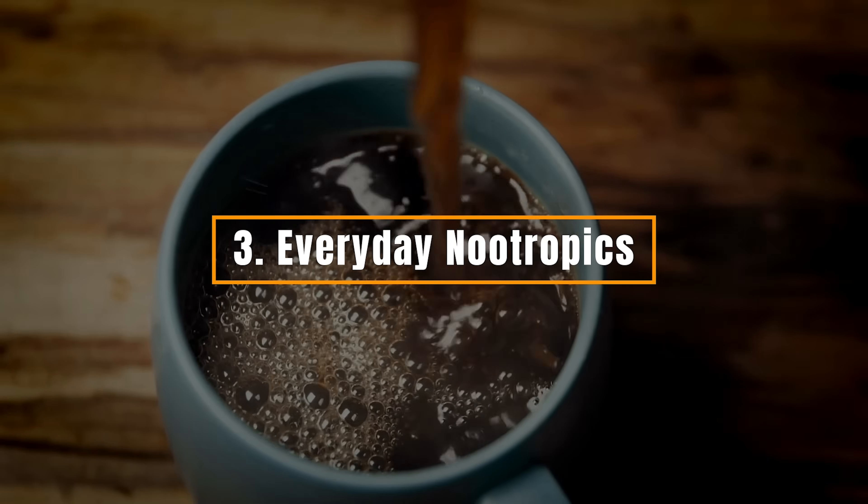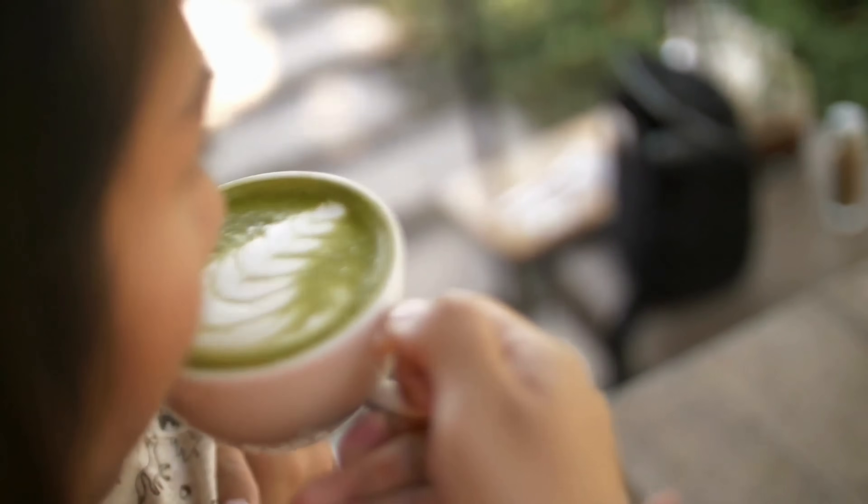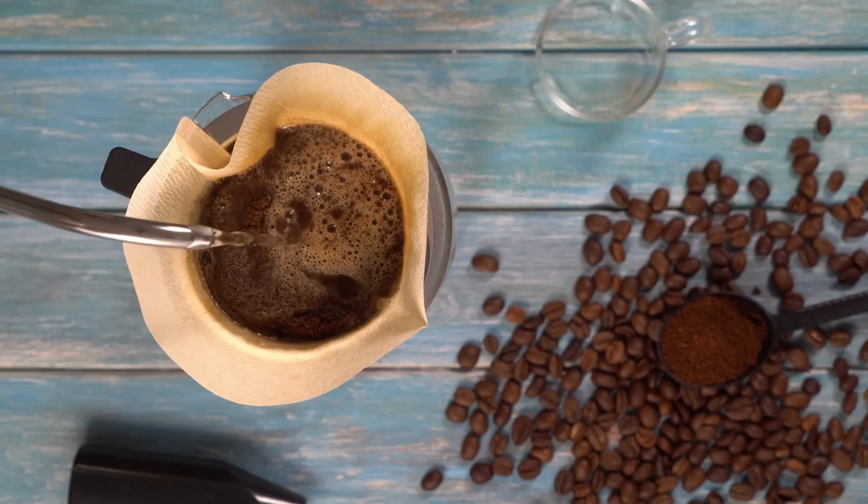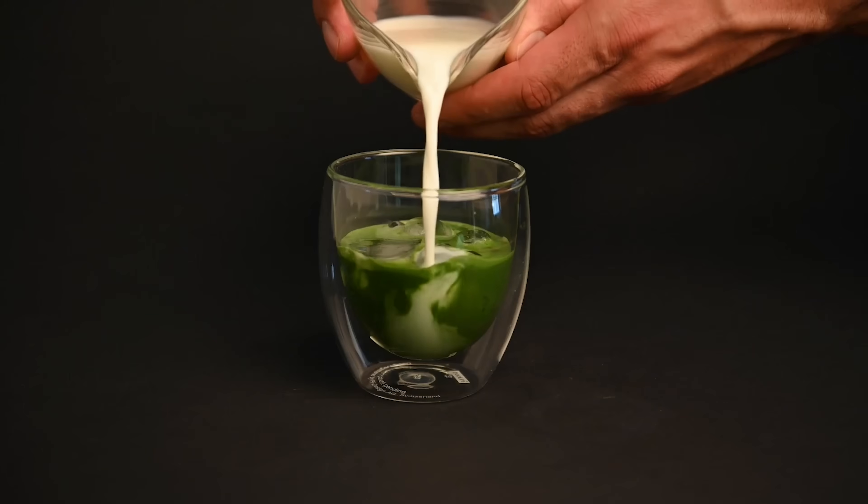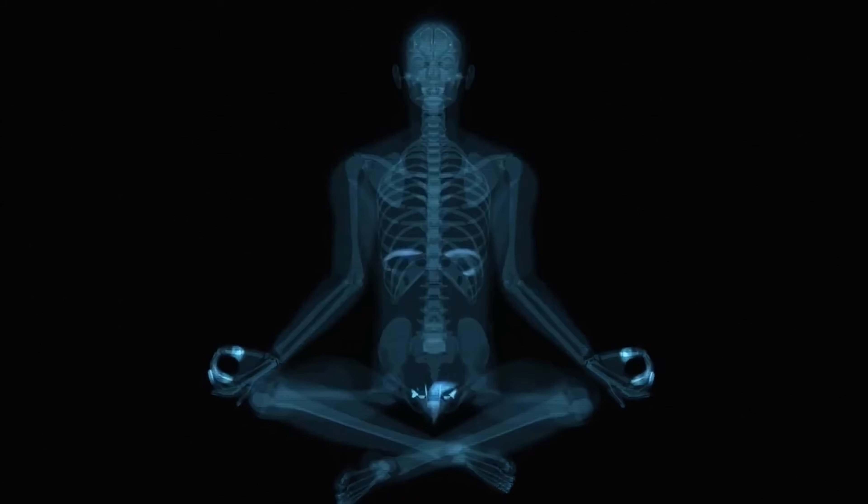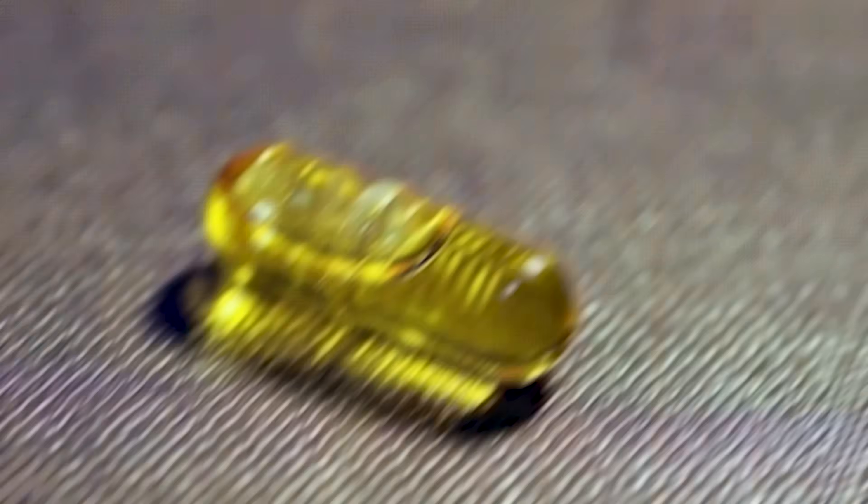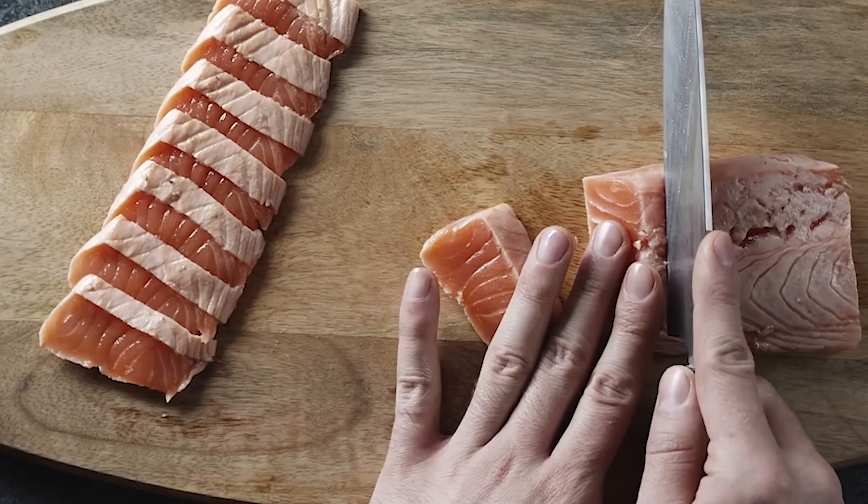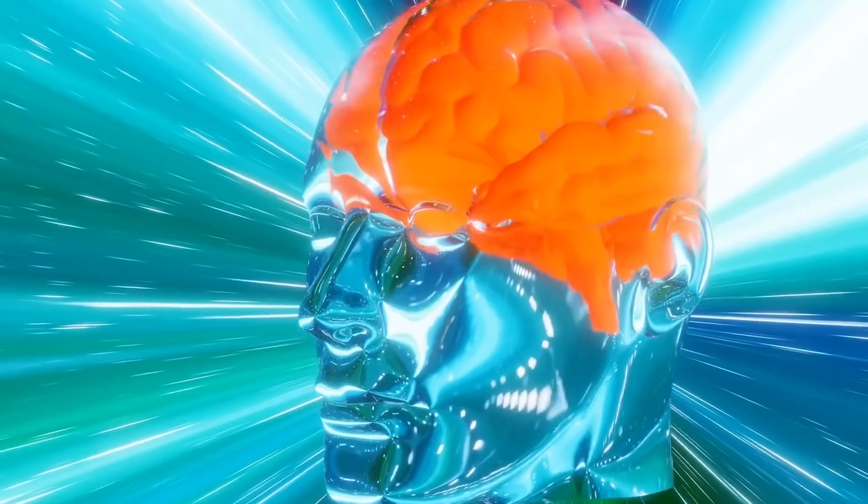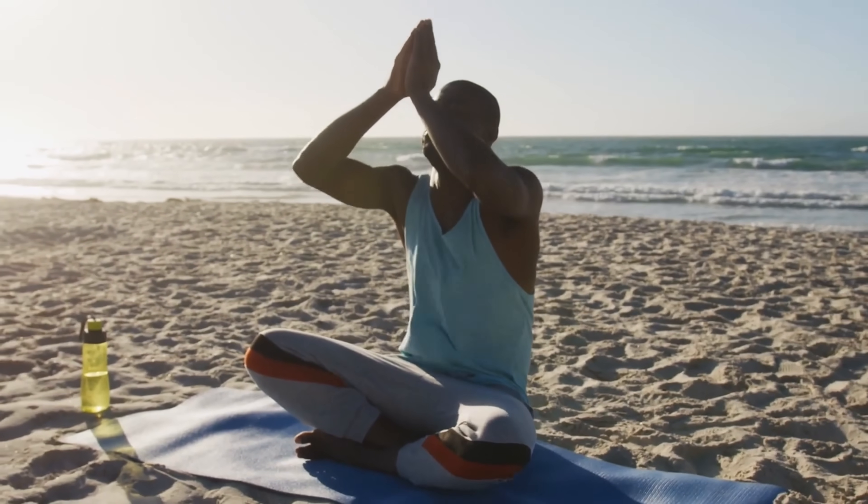Three, everyday nootropics. Believe it or not, you may already be using nootropics in your daily routine without even realizing it. Caffeine plus L-theanine, a powerful combination that enhances alertness and attention without the typical caffeine jitters. It's one of the most studied and accessible nootropic stacks. Omega-3 fatty acids (EPA and DHA), found in fish oil, these are essential for maintaining the structure and function of brain cells. They've been linked to improved mood, memory, and focus.